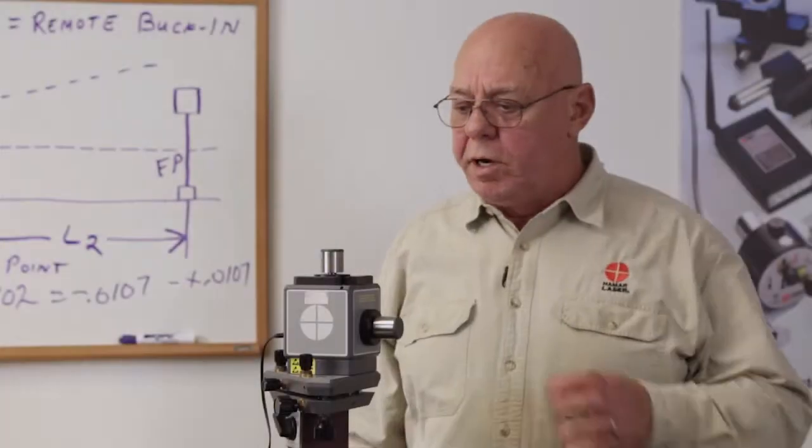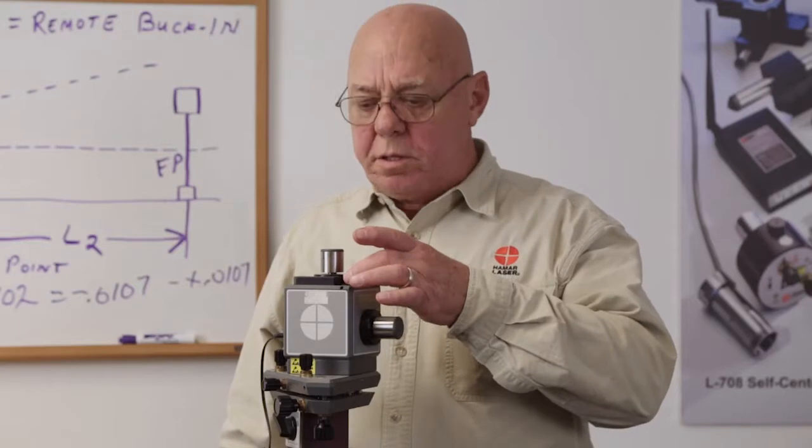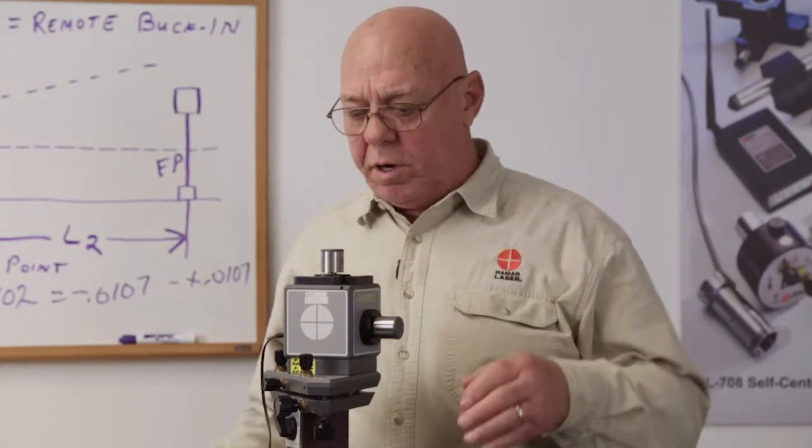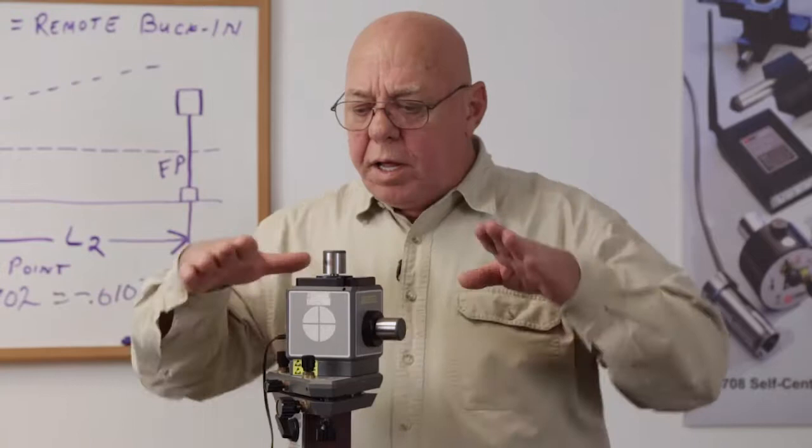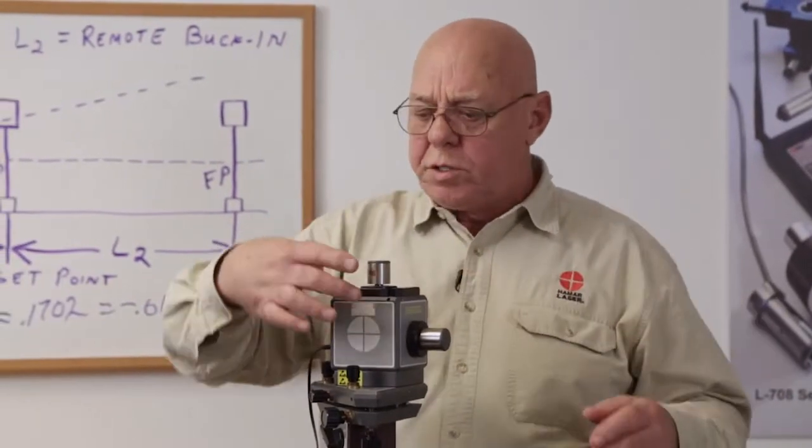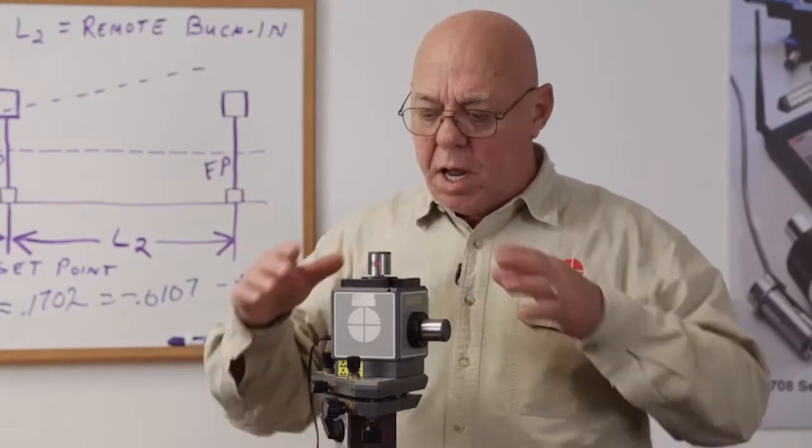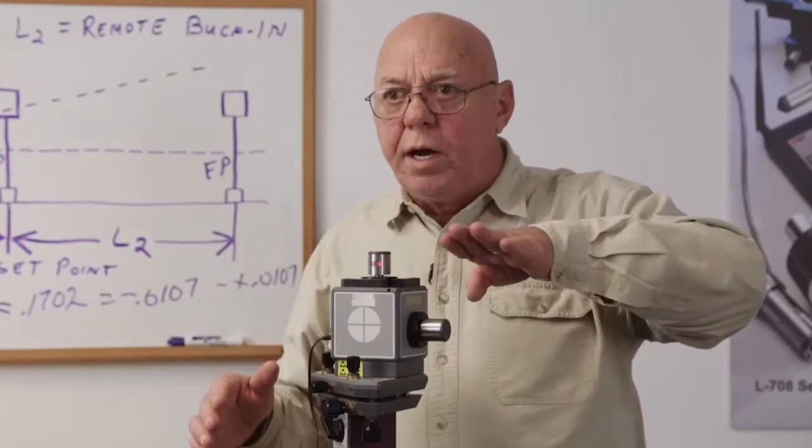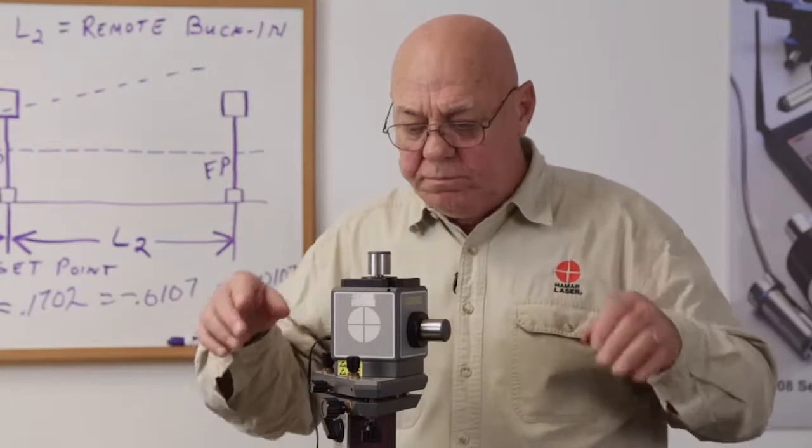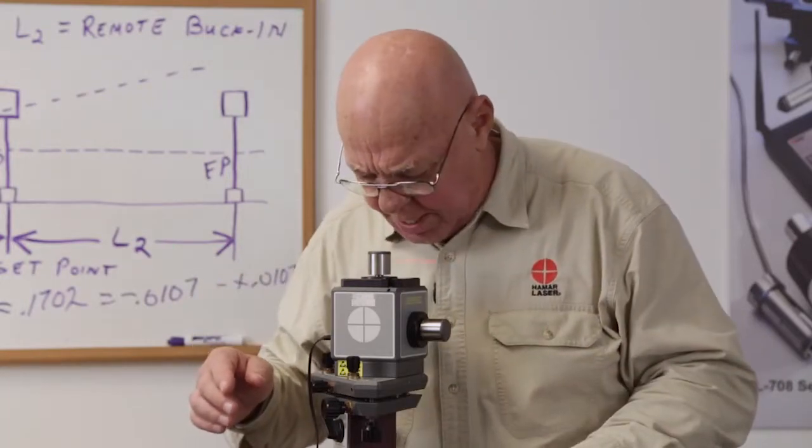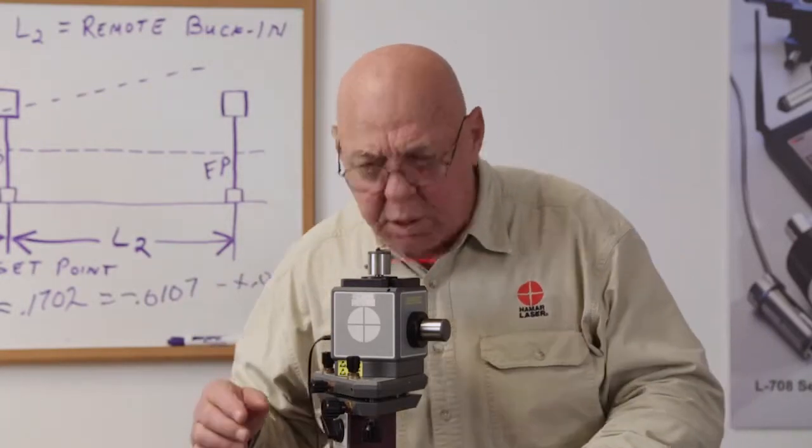The last step that we do is make sure that the cross level has remained level. In this case, the roll level. We know this one isn't level because we tilted the laser to match this surface. But the roll way or the cross level, we need to keep that level. So, I'm going to double check that. Yep, that looks good.